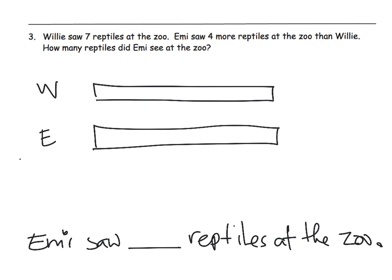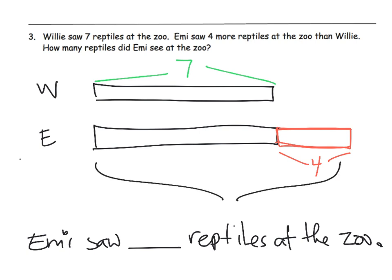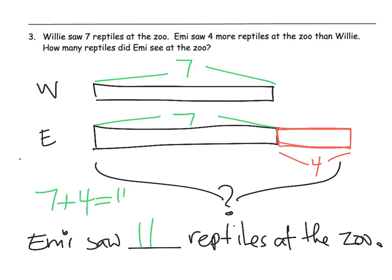That's Step 2. Step 3 is to start modifying these tapes based on the problem. Willie saw 7 reptiles — let's make it green because they're reptiles — so that length is 7. Emmy saw 4 more reptiles, which means we need to extend her tape diagram a little bit, and that extra piece is 4. The question asks how many reptiles did Emmy see, so we want her total. That means we need to add this length plus this length. Well, this section is also 7, because we started by giving them both the exact same length. So Emmy is 7 plus 4, which is 11. Emmy saw 11 reptiles at the zoo.